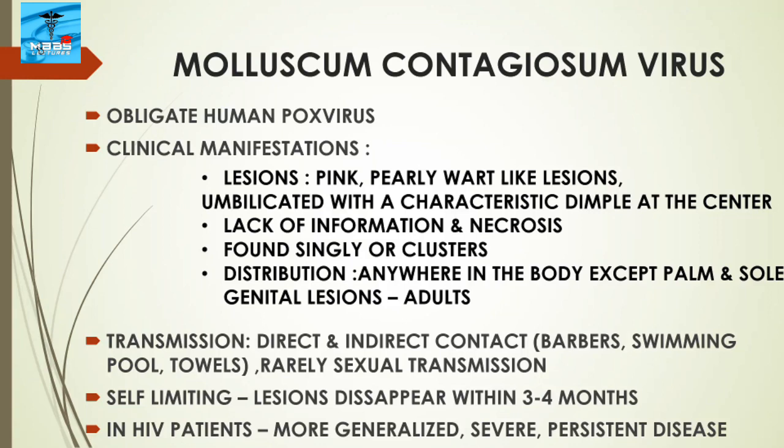Molluscum contagiosum virus is an obligate human poxvirus. Regarding clinical manifestations, it produces pink, pearly, dome-like lesions with a characteristic central dimple. The lesions are characterized by lack of associated inflammation and necrosis and are found singly or in clusters. They can appear anywhere on the body except the palms and soles, and genital lesions are seen in adults.